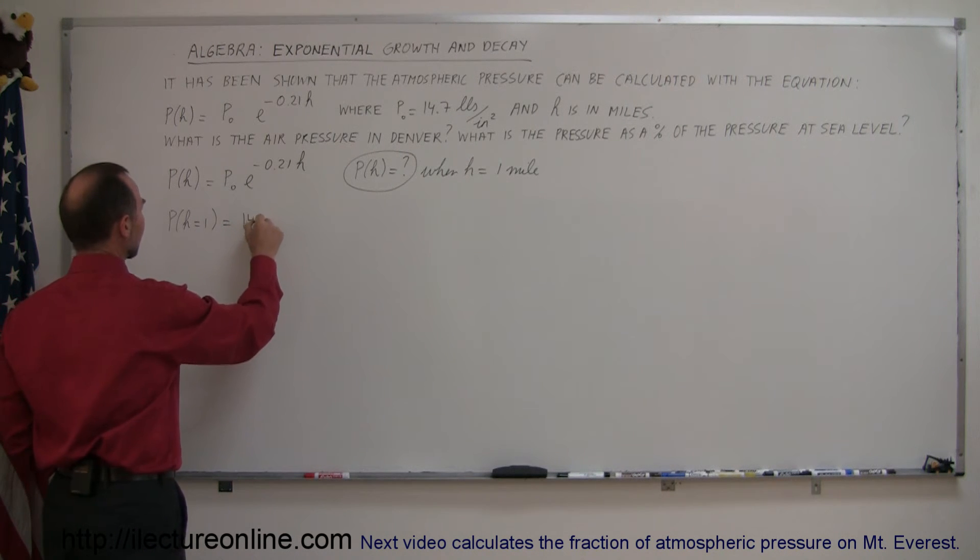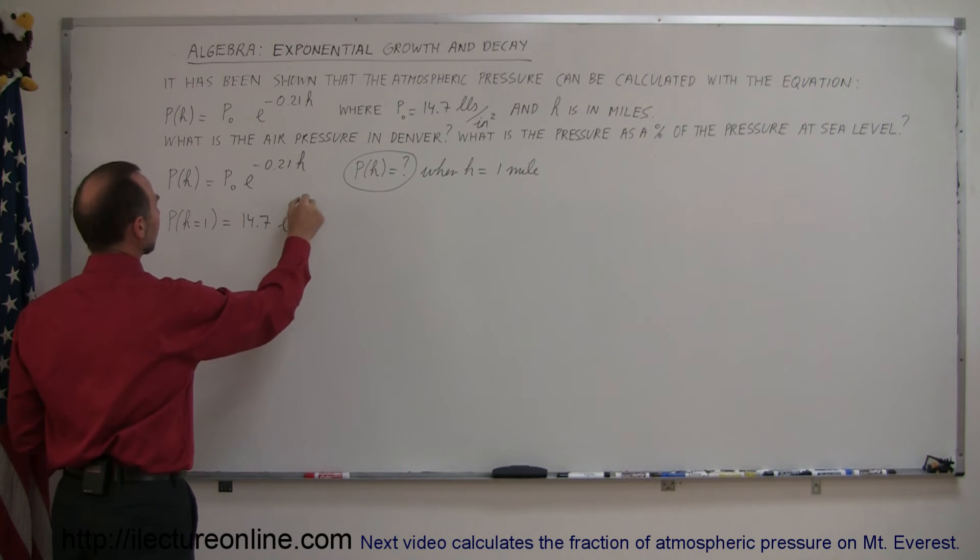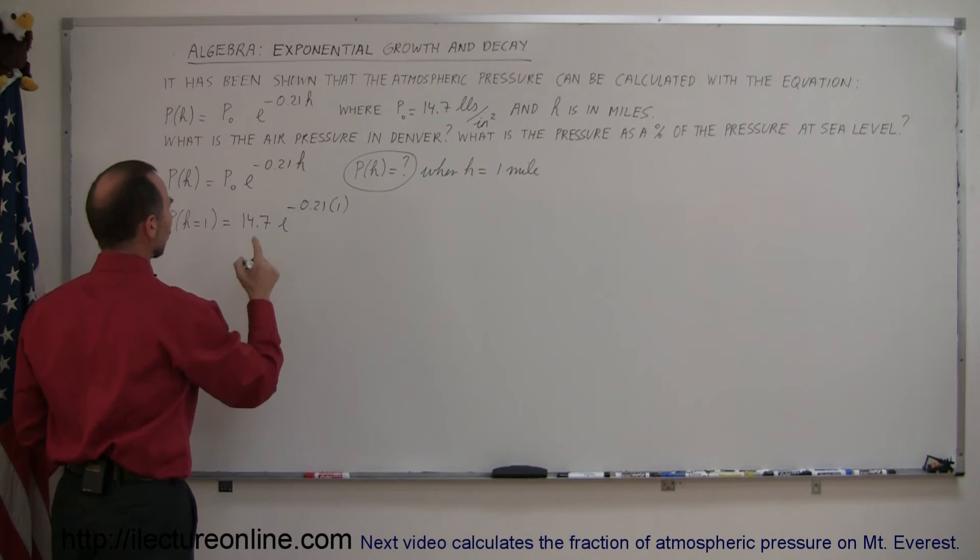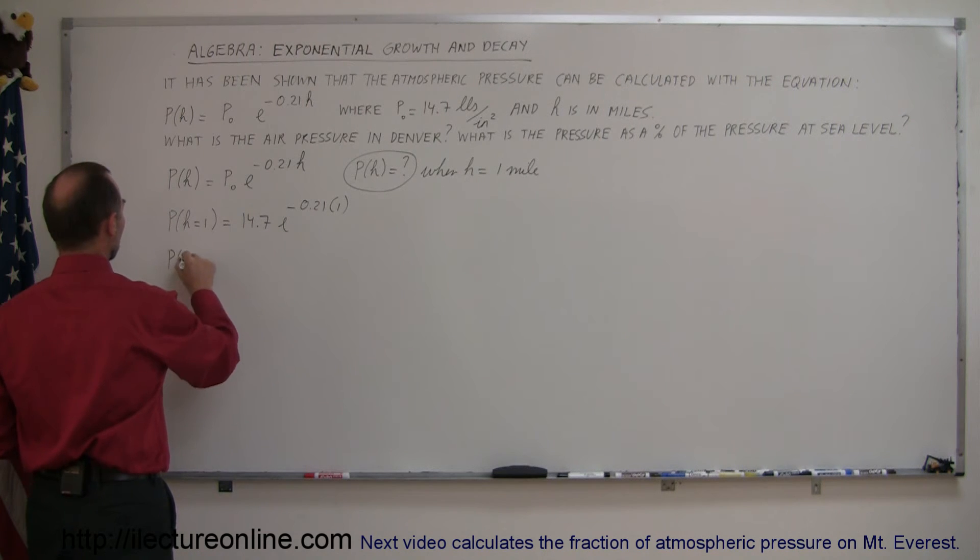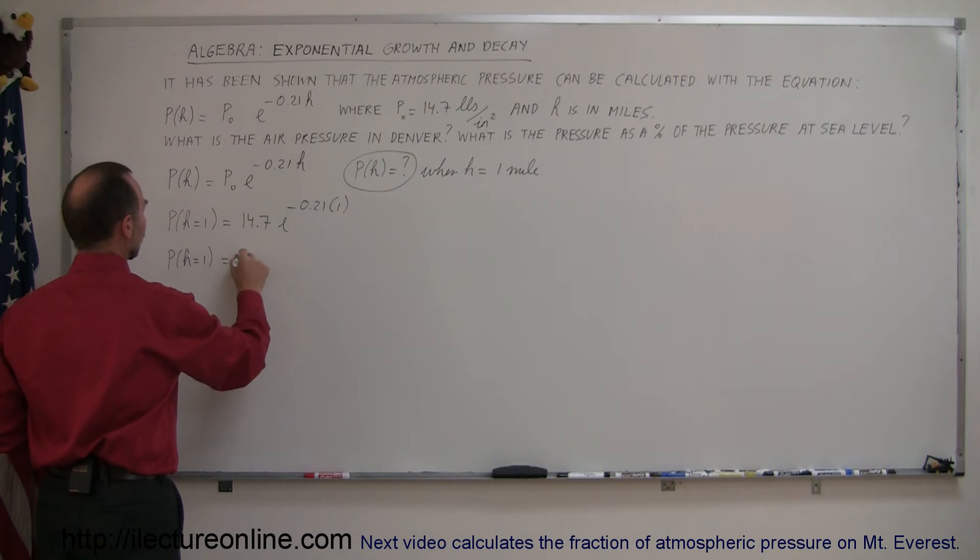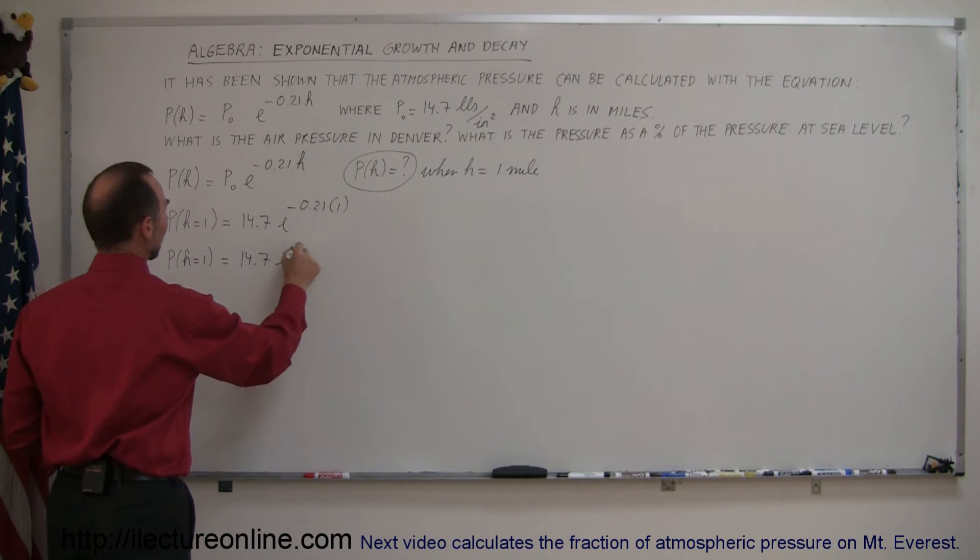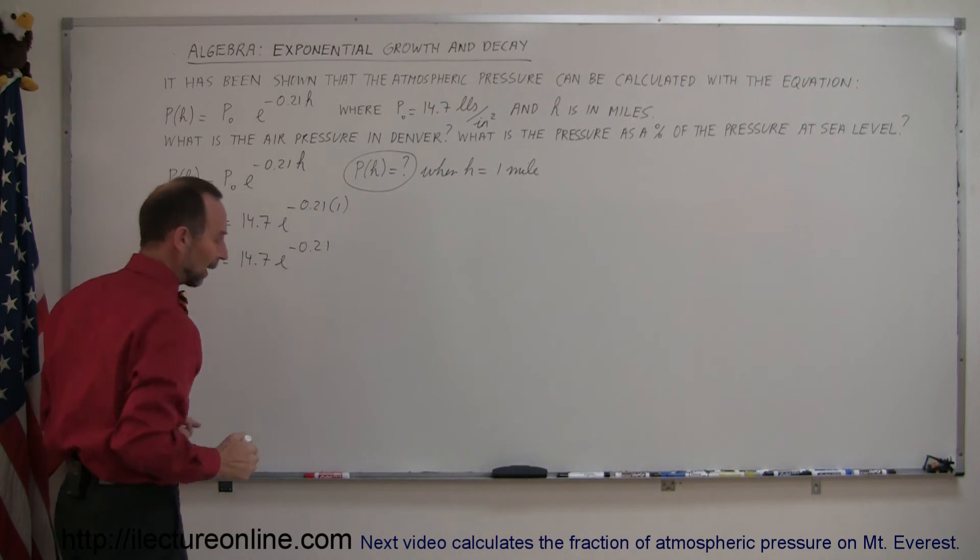So plug in the 14.7 e to the minus 0.21 times one. So simplifying that, we have the pressure when h is equal to 1 is equal to 14.7 e to the minus 0.21, and now we grab a calculator.